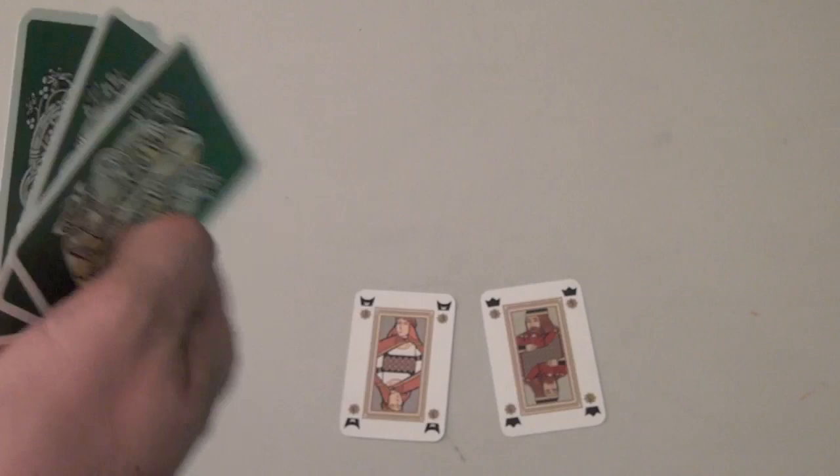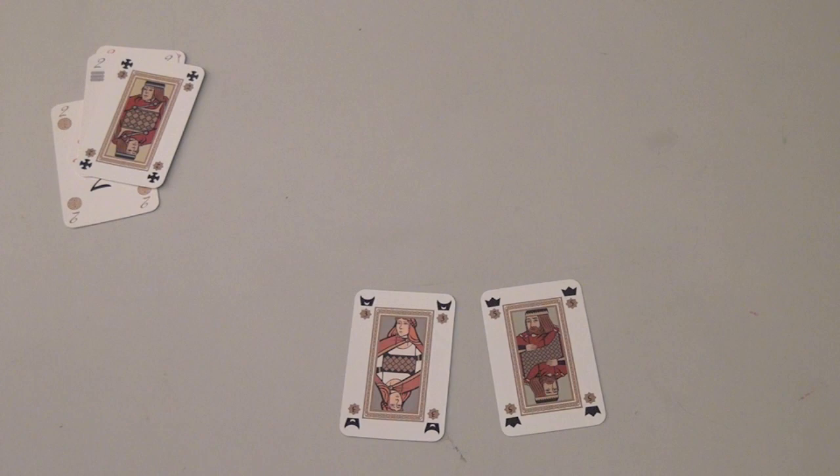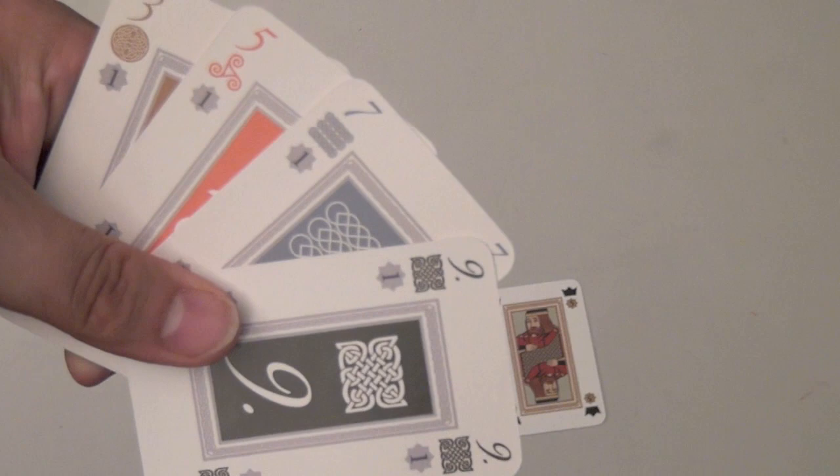Now there's something in this game called a bomb. The way a bomb works is you can always play a bomb, and that will win everything. Well, the bombs are actually ranked from lowest to highest. But for the most part, when you play a bomb, usually no one else is going to be able to beat that bomb. The bombs are—the lowest bomb is a three, five, seven, nine of the different colors.